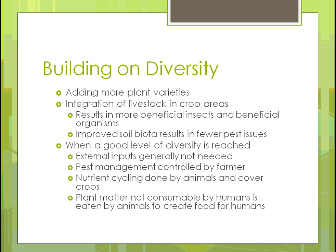When you reach a good level of diversity, you can start getting rid of some external inputs like pesticides and fertilizers. If you start doing crop rotations and similar practices, you're going to have a better farm area and produce better crops.